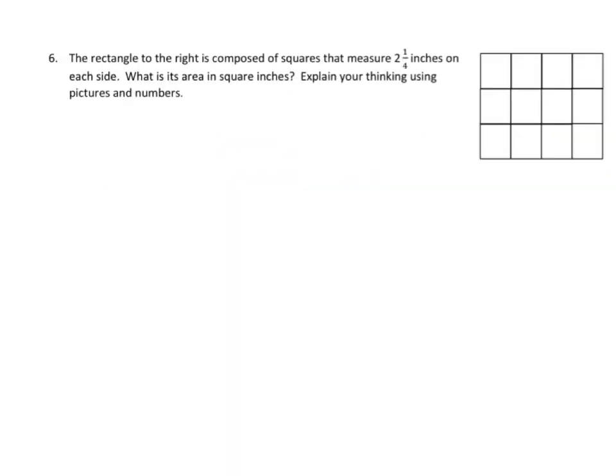We also have some other sorts of problems here. This is from the practice set once again, and there's a couple ways we could do this. We have a rectangle to the right composed of squares that are each 2 and 1⁄4 inches on each side. What is the area in square inches? Explain your thinking using pictures and numbers. Well, we have a picture here, and we know that each one of these is 2 and 1⁄4.